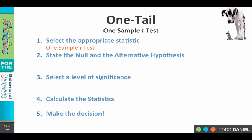So let's walk through the five steps of hypothesis testing. The statistic we're going to use is a one-sample t-test. For the null and alternative hypothesis, when you're doing a one-tailed test, it's easier to start with your alternative hypothesis and then work backwards. We have 105 as our comparison value, and since we want to know if Ritalin improves attention, we're interested in scores greater than 105. So our alternative hypothesis is: H₁: μ > 105.